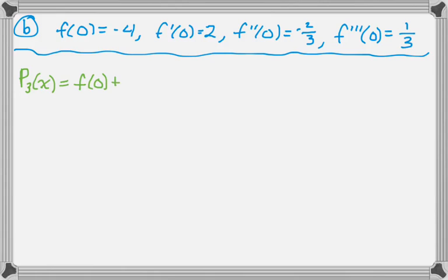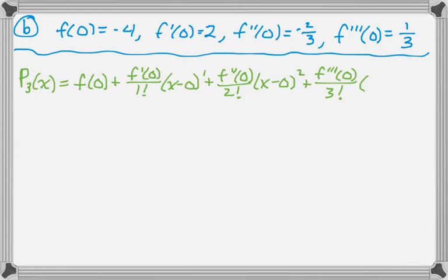So we write it out: that's f(0) + f'(0)/1! (x - 0)^1 + f''(0)/2! (x - 0)^2 + f'''(0)/3! (x - 0)^3. And now we just have to substitute in the things we know.